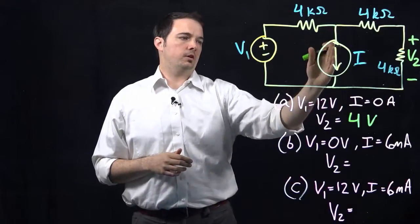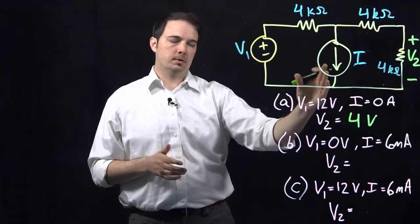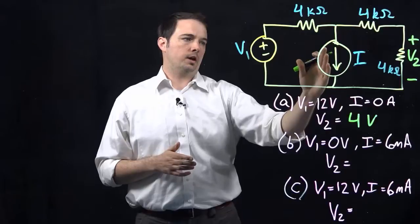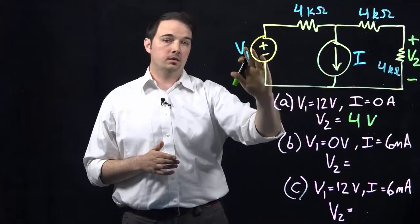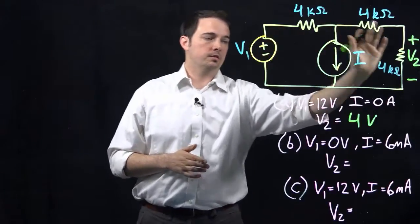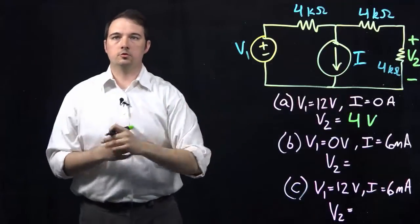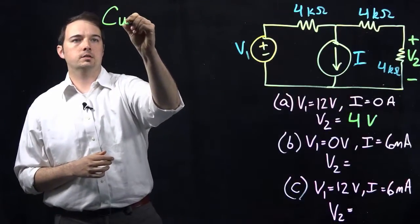So since we have just one current source that's basically active in the circuit, and we know that current from that current source is going to be divided between this branch and this branch, we could then use, as you might expect, the current divider rule.